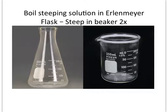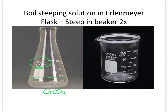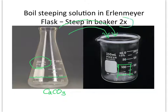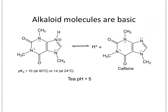We're going to boil our steeping solution in a 250 mL Pyrex Erlenmeyer flask — remember we don't use Erlenmeyer flasks for measurement, but it's about 90 milliliters of water with calcium carbonate added. We'll steep the tea bags in a 250 mL beaker, pour the hot solution over them, then squeeze the bags out, transfer to another container, and pour the remaining solution in. We steep and squeeze our tea bags two times.